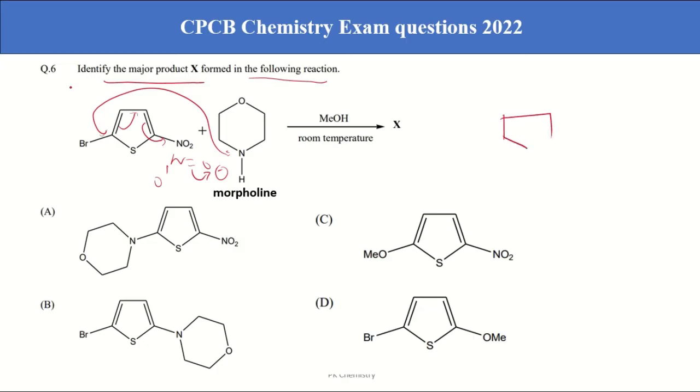Then what it forms. So sulfur and bromine and here morpholine and then bond and double bond N bond O minus. Then this comes here. Then this bond comes here. Bromine goes out. So finally leads to formation of compound A.